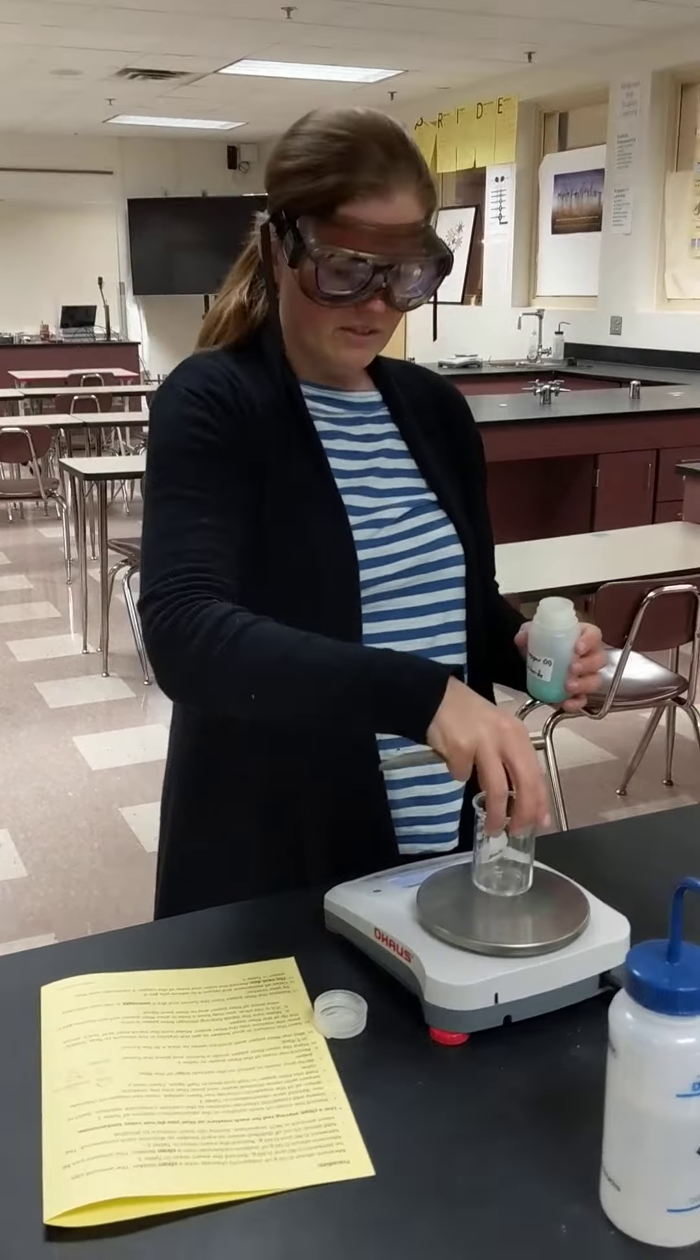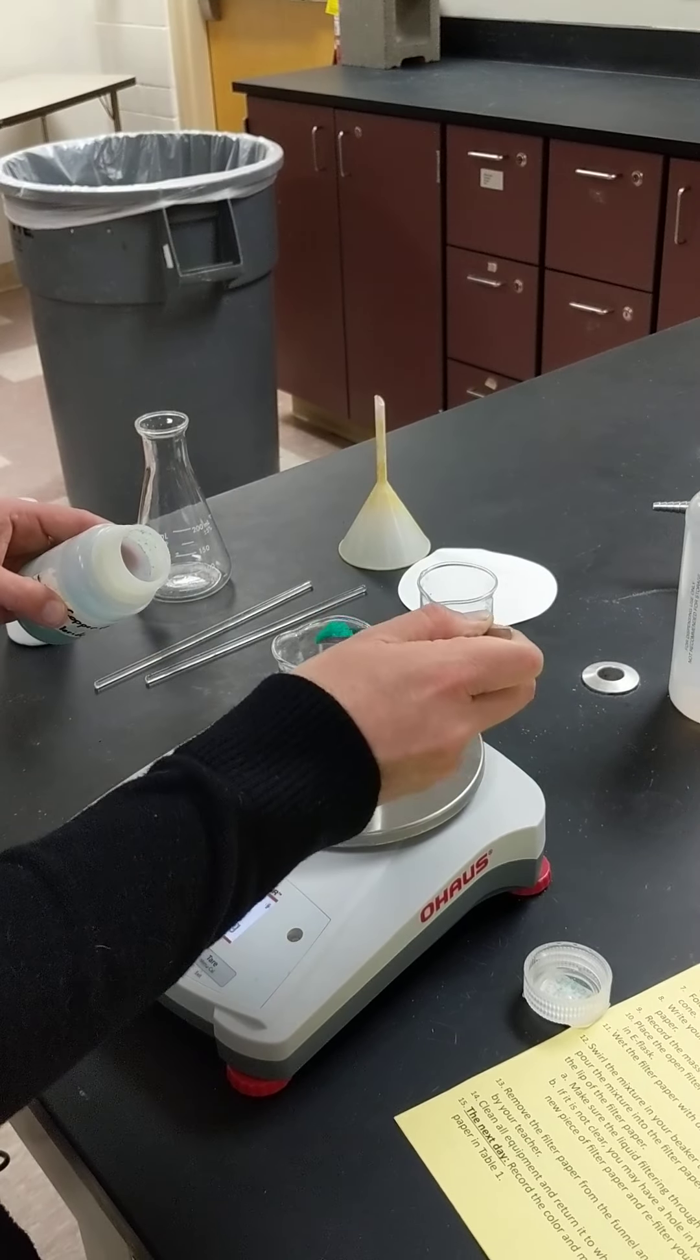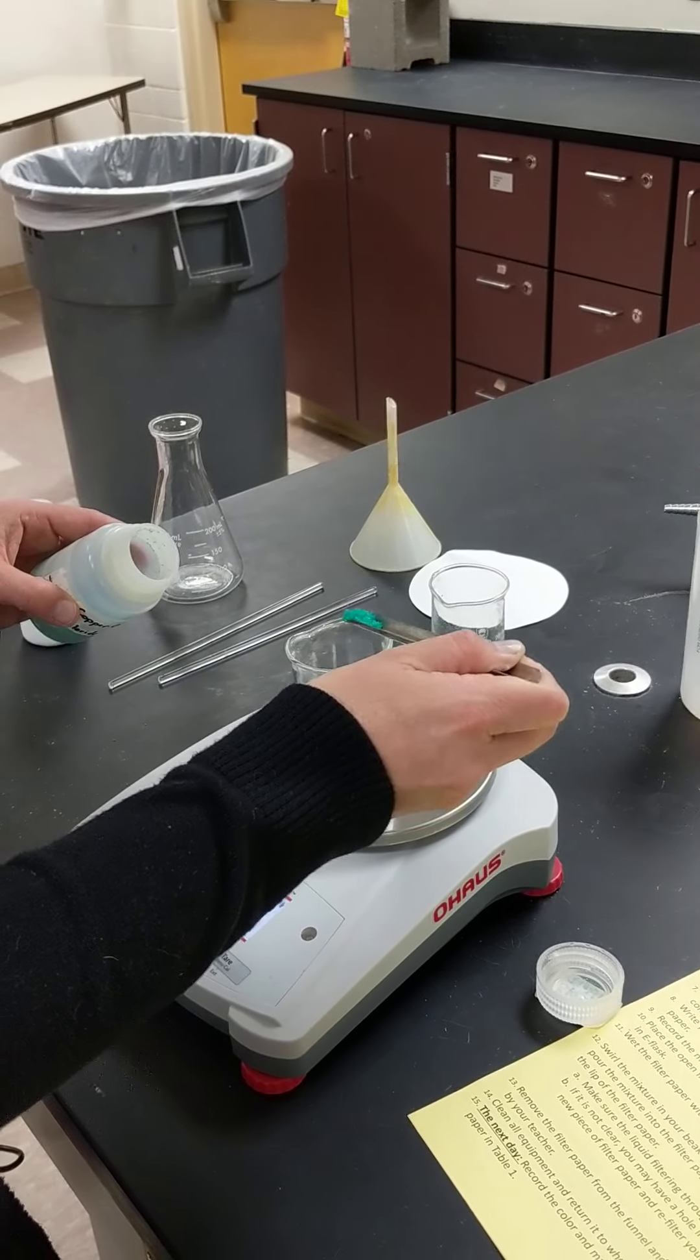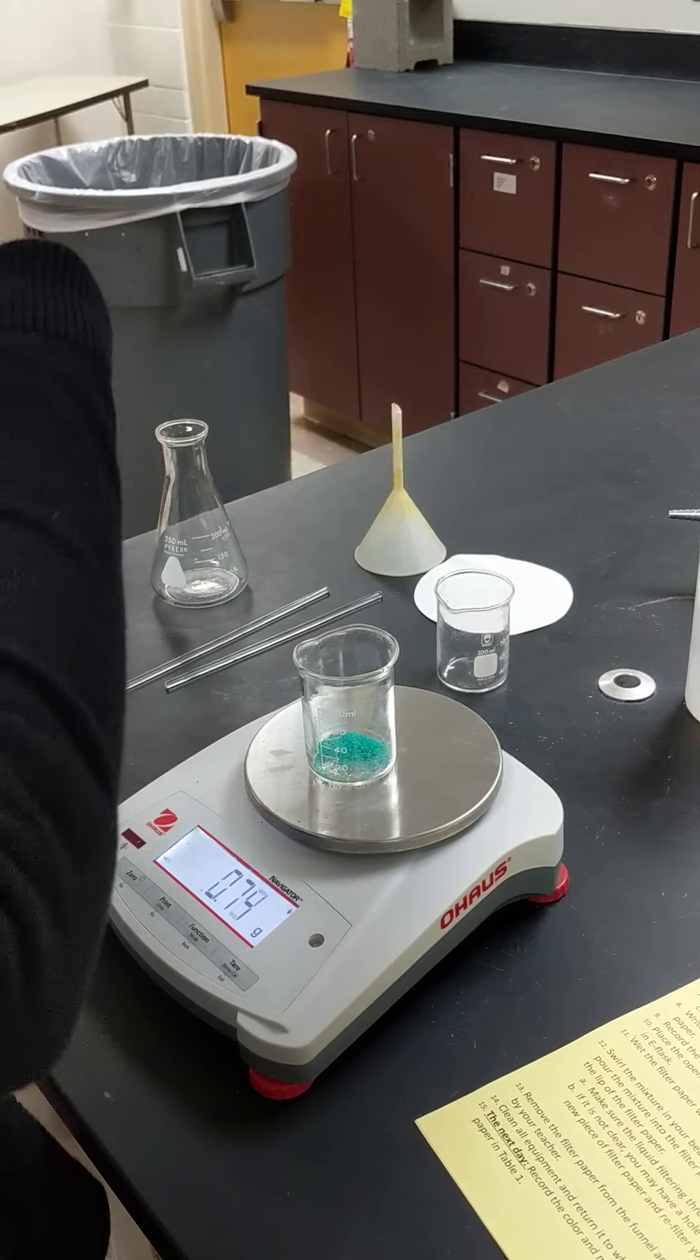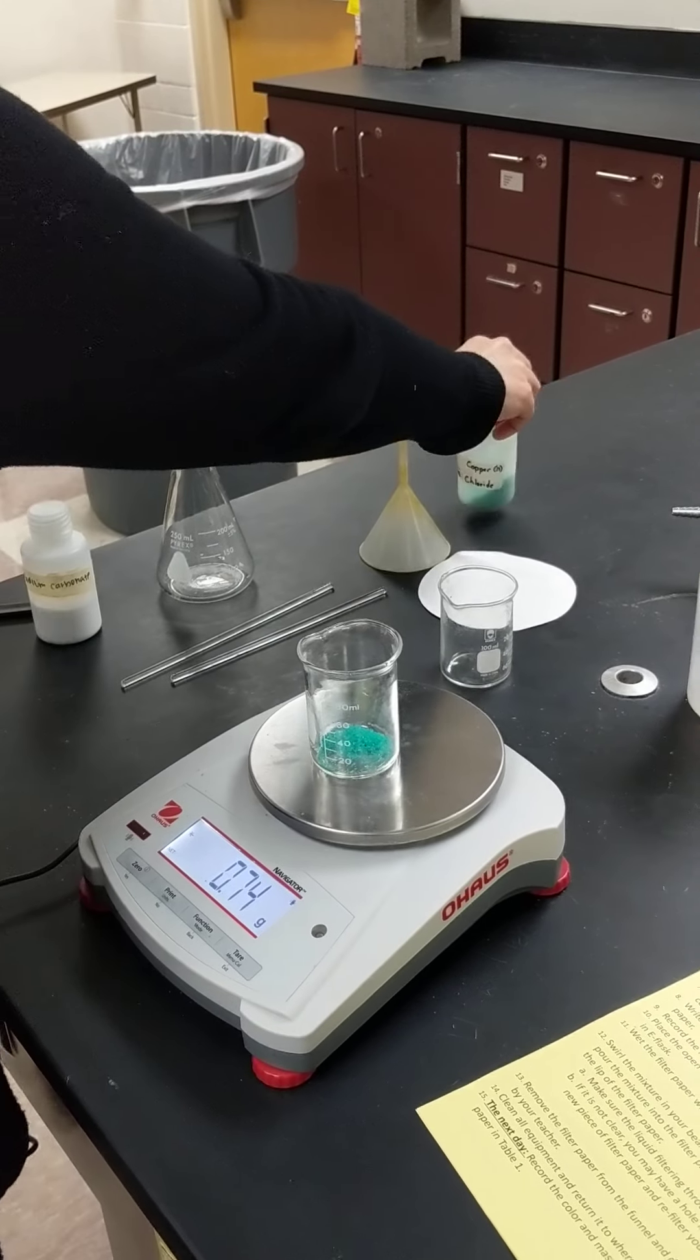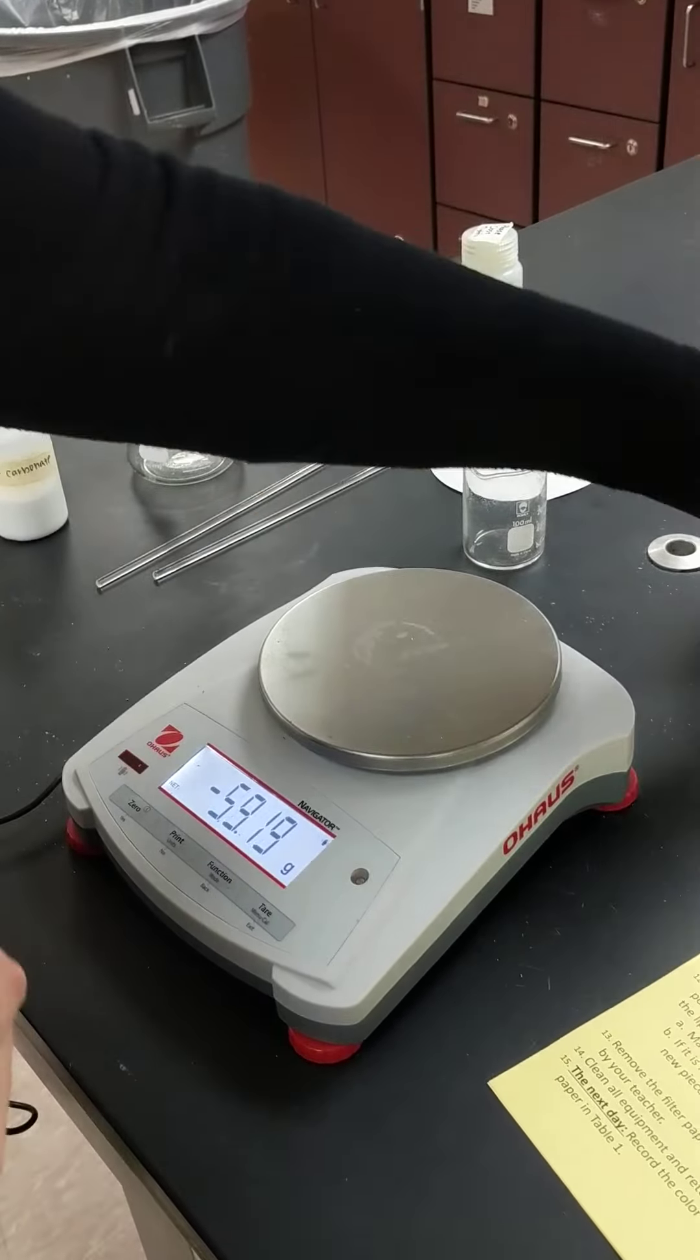So we're going to zero out the beaker. We're going to tare the beaker and then we're going to get 0.5... 0.75. We won't put back, that's fine. It doesn't really matter what we start with. 0.75.